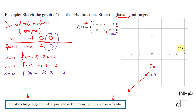Now I'll move to the right of zero and try x equals 1. Using the second piece since 1 is greater than 0: we get negative 1 minus 3, which equals negative 4. So the point (1, −4) is plotted on the graph.